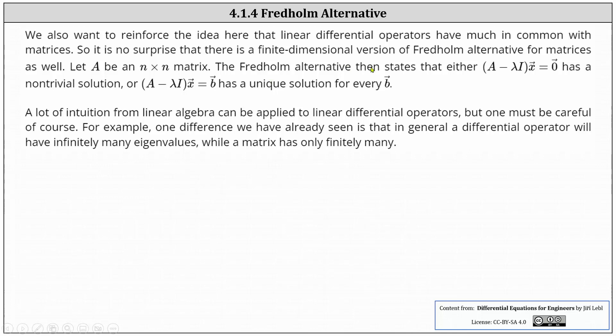The Fredholm alternative states that either the difference of A and lambda I times vector x equals a zero vector has a non-trivial solution, or the difference of A and lambda I times vector x equals vector b has a unique solution for every vector b.